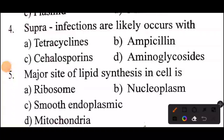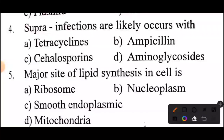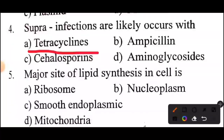Fourth question: superinfections are likely to occur with? Answer: option E, tetracyclines.